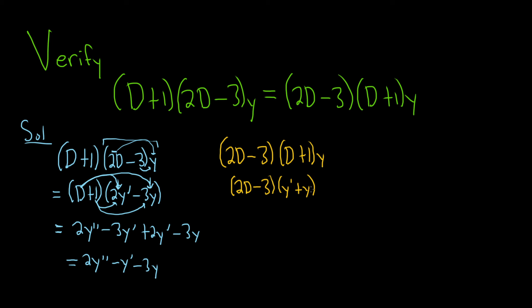Now let's apply 2D to everything here. We have 2D and y prime, that gives us 2y double prime. We're taking the derivative of the derivative, and then apply 2D to y, that gives us plus 2y prime. Apply the minus 3 to y prime, so that's minus 3y prime, and then minus 3y is the last piece.